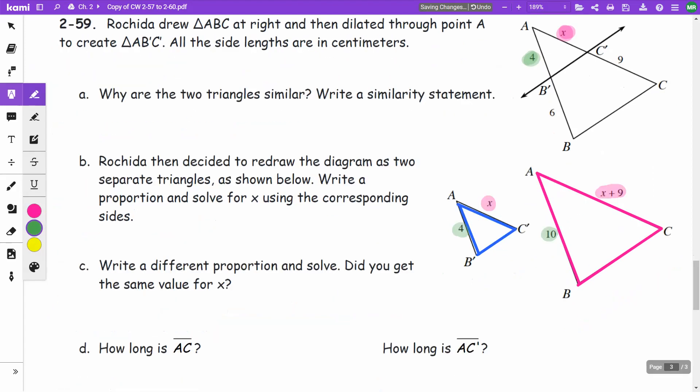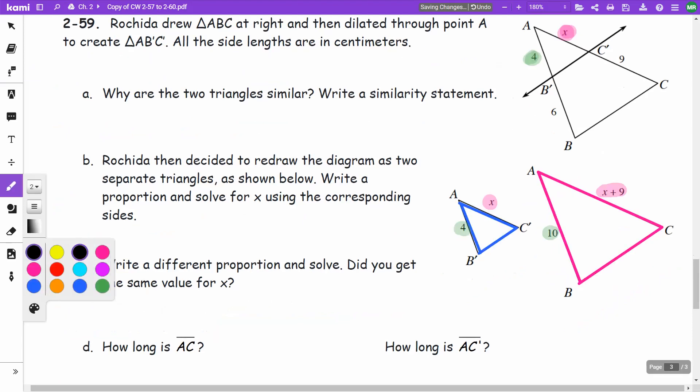So I'm going to set up a proportion and solve it. I can do two things. I can go X over X plus 9, where I do one side and one triangle over the corresponding from the other, and I got to keep that same pattern.